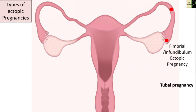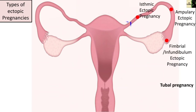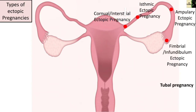Ampullary ectopic pregnancy occurs in around 80 percent of cases and is the most common type of ectopic pregnancy. Sometimes the embryo can also implant in the distal narrow part of the fallopian tube called the isthmus — such a pregnancy is called isthmic ectopic pregnancy, seen in around 12 percent of all cases. Another type is pregnancy that occurs in the cornual part of the fallopian tube, which is the interstitial part; this is called cornual or interstitial ectopic pregnancy, seen in around 2 percent of cases.